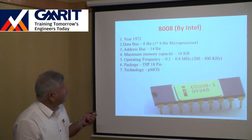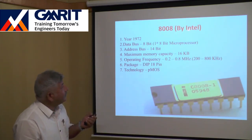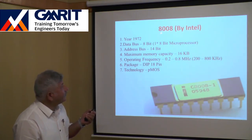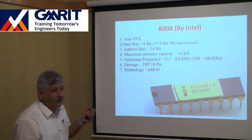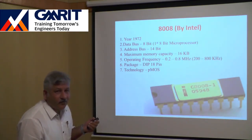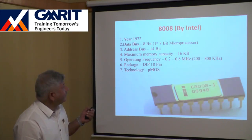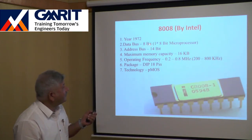After the 4004, Intel released another processor named the 8008, launched in 1972 — just one year after the first processor. The data bus was increased; now it was 8-bit, making this the first 8-bit microprocessor.